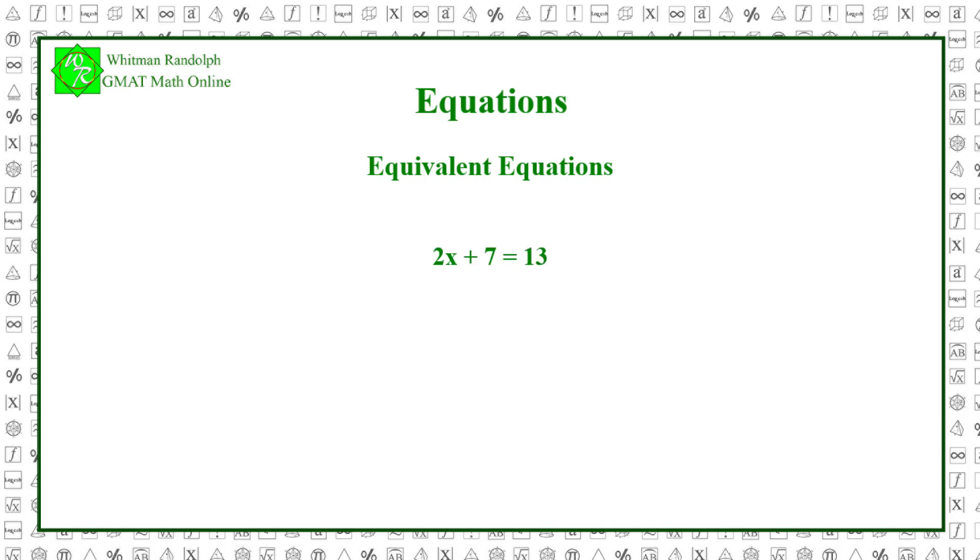For example, 2x plus 7 equals 13 is equivalent to 4x plus 14 equals 26 because if we multiply both sides of the first equation by 2, then we obtain the second equation.